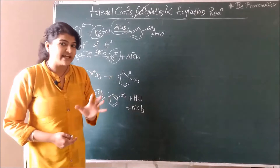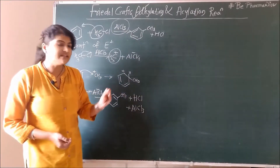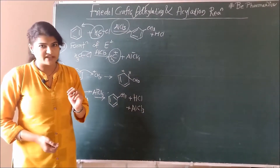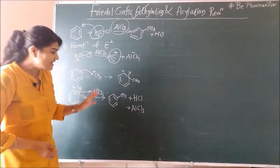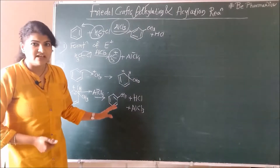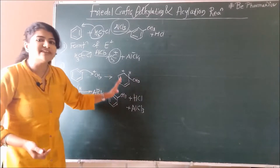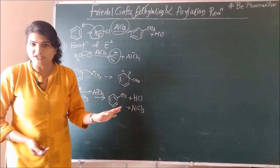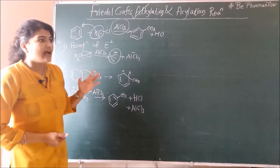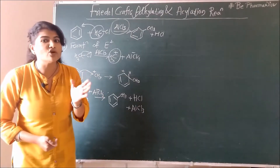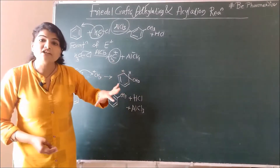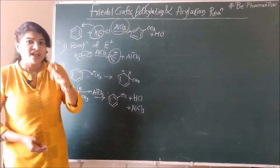While Friedel-Crafts alkylation is very useful for formation of certain alkyl benzenes, it suffers two major drawbacks. First, it is very difficult to stop the reaction at the monosubstituted level — it often yields di-substituted or tri-substituted alkyl benzenes. Second, there are certain alkyl benzenes which cannot be prepared by Friedel-Crafts alkylation, because the carbonium ions undergo rearrangement before the final step.